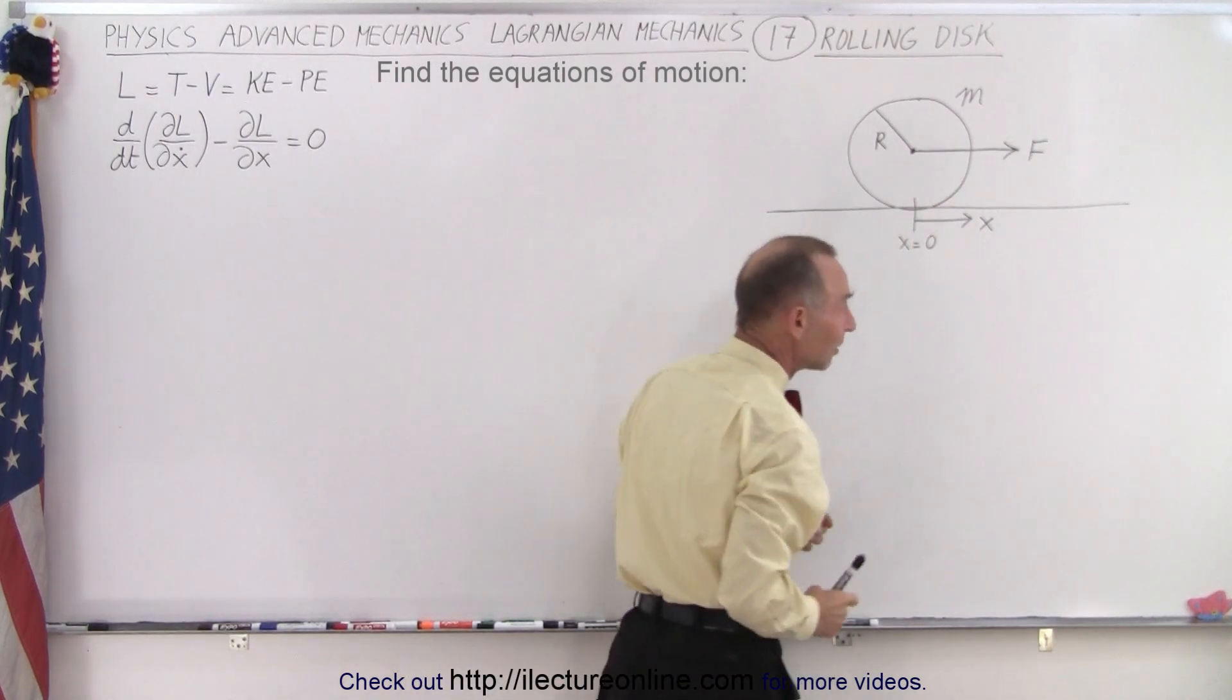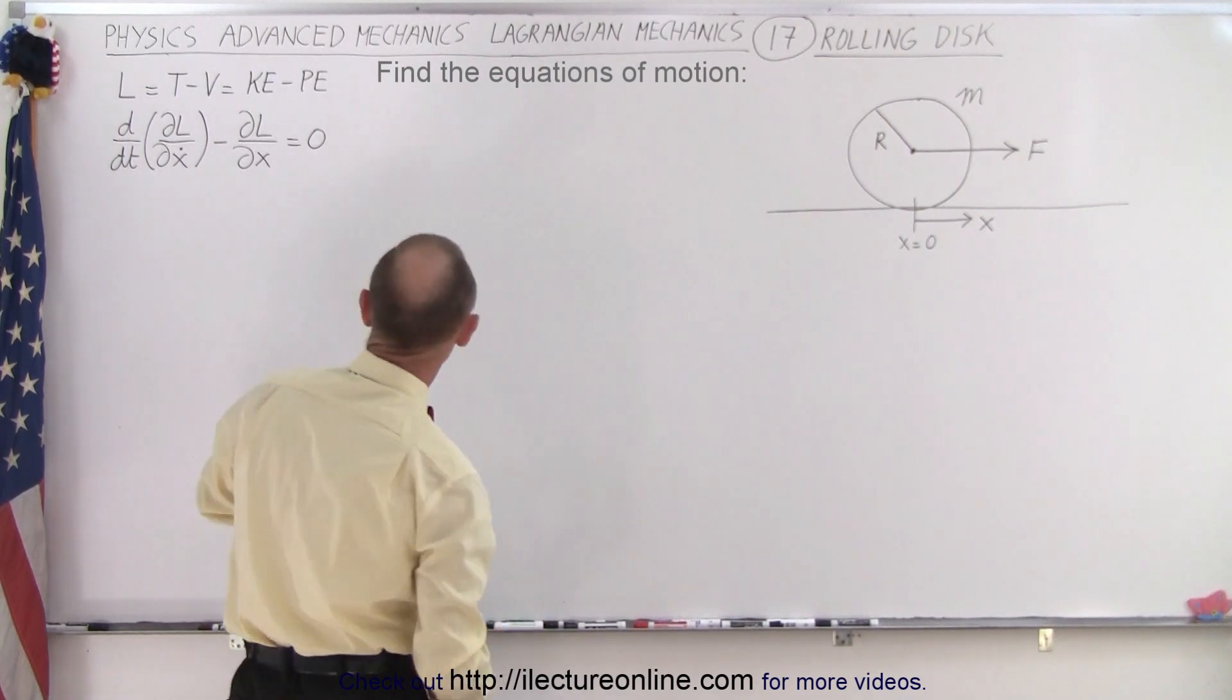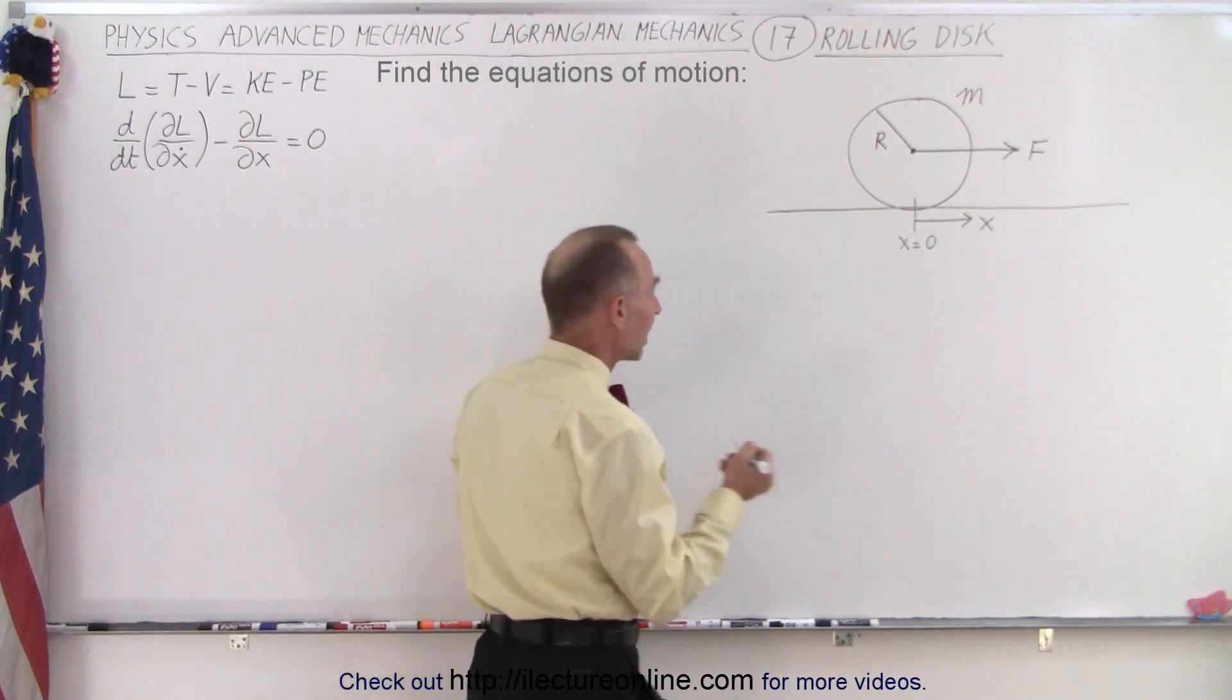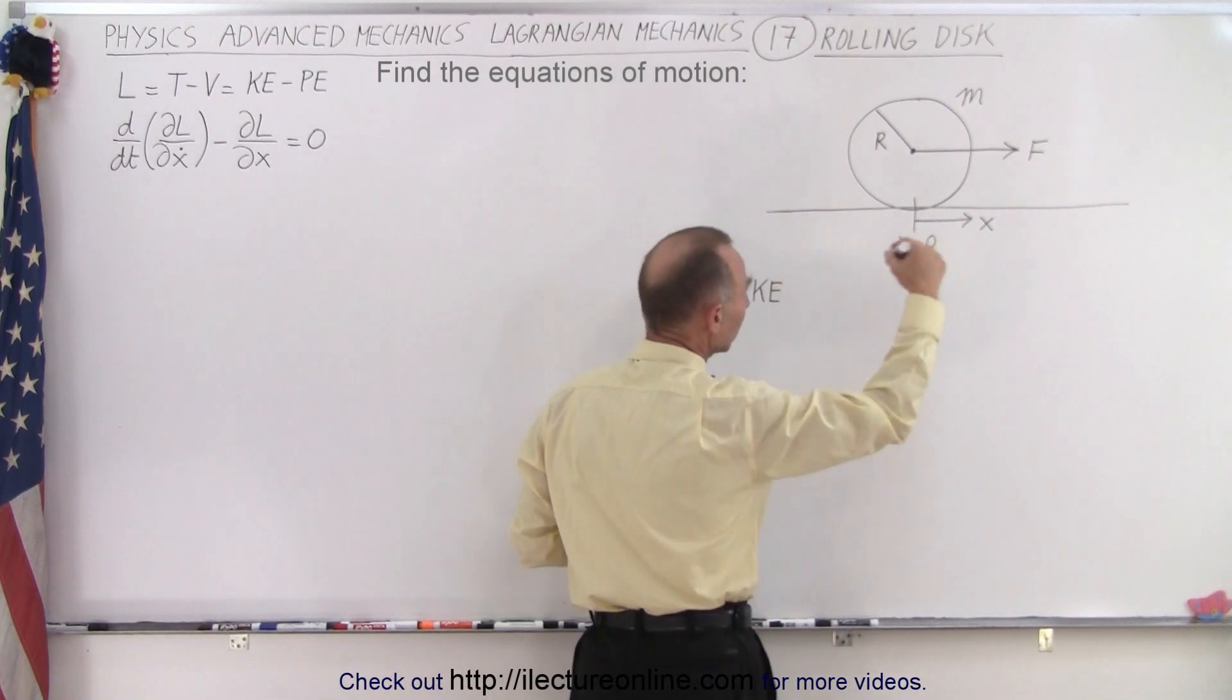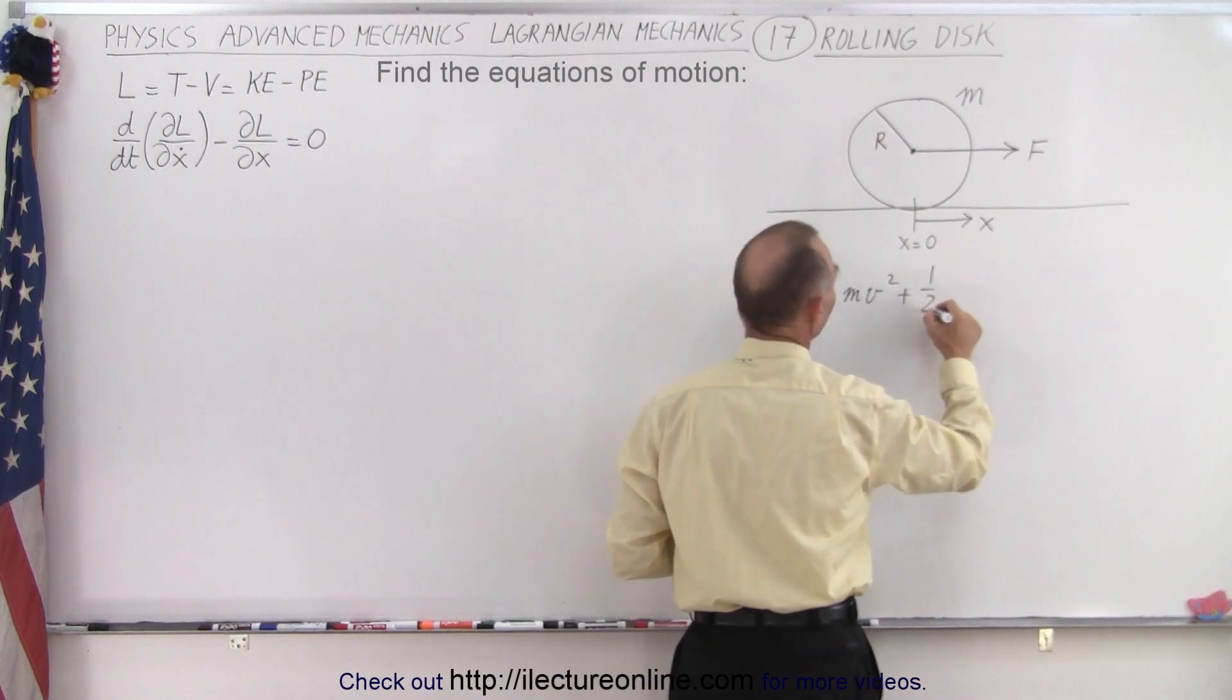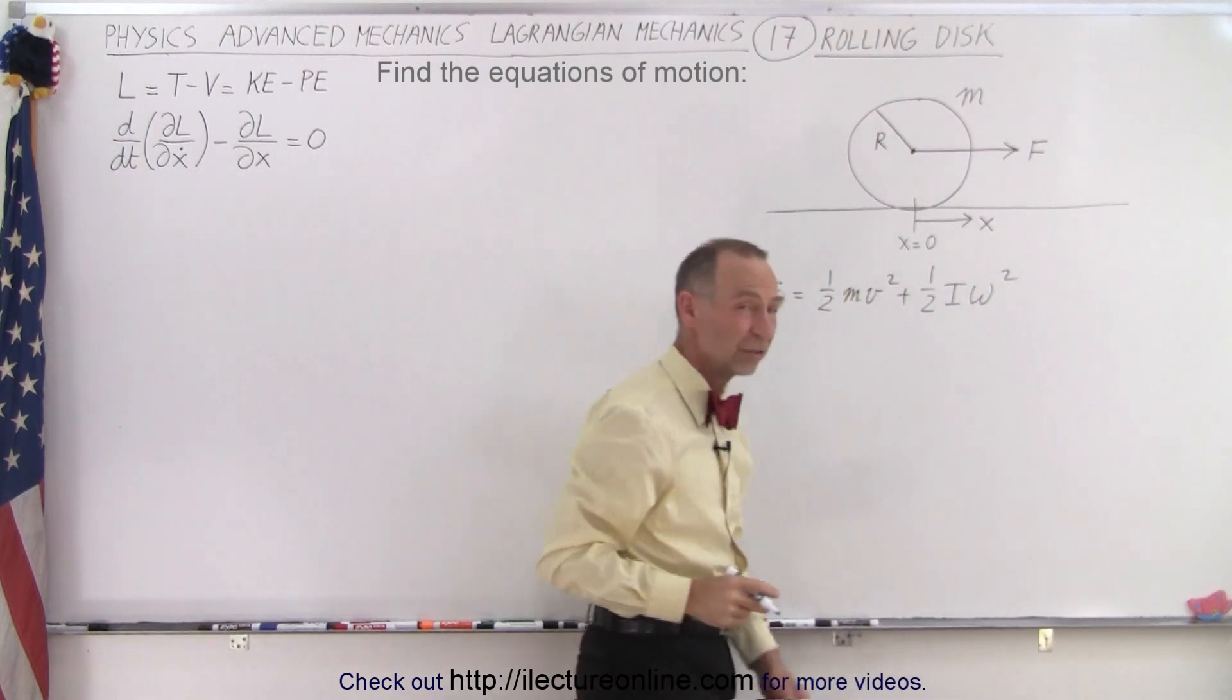When we pull it, it'll have the translational kinetic energy and the rotational kinetic energy. So we need to find all the kinetic energies and all the potential energies of this particular system. The kinetic energy of this system, once we start pulling on it and it goes into motion, will be equal to one-half M V squared plus one-half I omega squared. This is for the translational kinetic energy, and that's for the rotational kinetic energy.